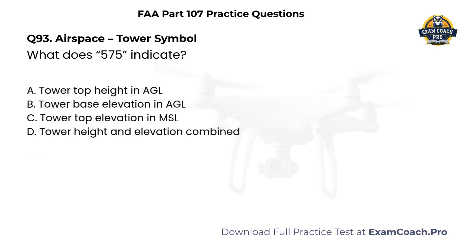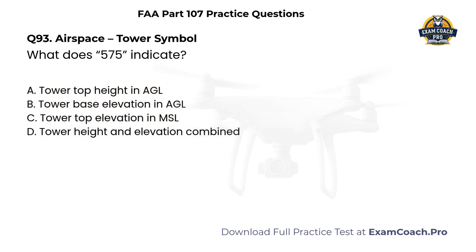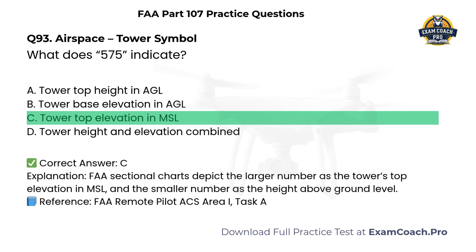Airspace. Tower symbol. Refer to sectional chart tower symbol with number 575. What does 575 indicate? A. Tower top height in AGL. B. Tower base elevation in AGL. C. Tower top elevation in MSL. D. Tower height and elevation combined. Correct answer: C. Sectional charts depict the larger number as the tower's top elevation in MSL, and the smaller number as the height above ground level.